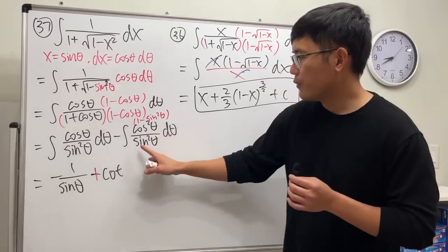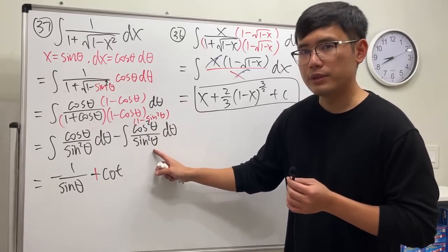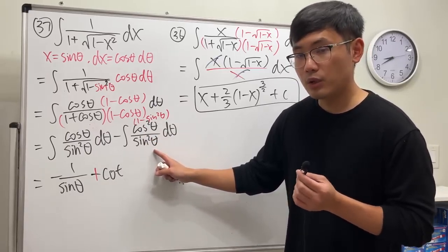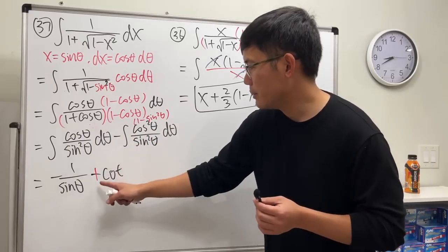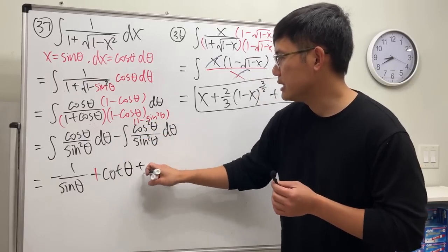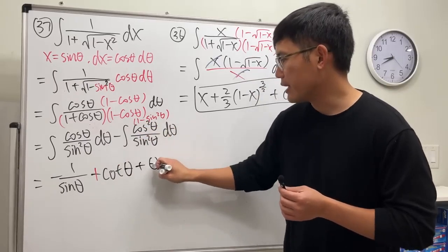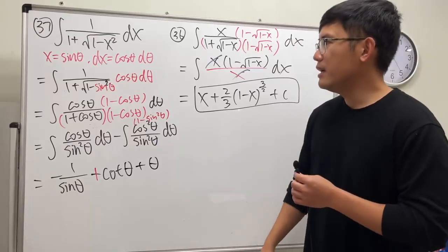One over sine square theta is cosecant square theta, and the integral of cosecant square theta is negative cotangent theta. The negative negative is positive cotangent theta. Negative negative positive. This and that is just one. Integrating one in the theta world is theta, so that's what we have.